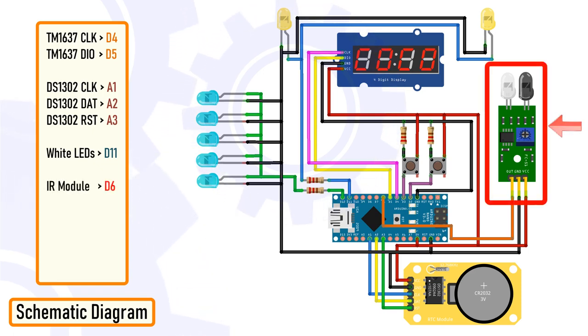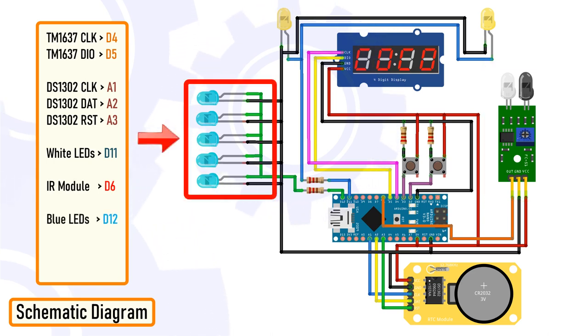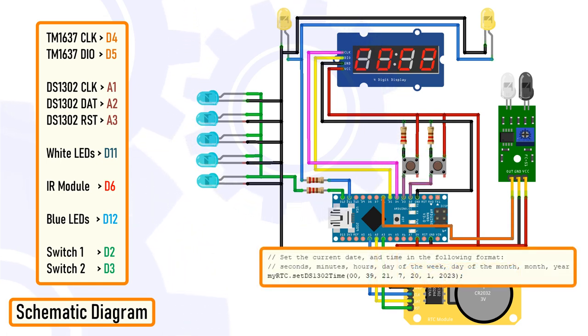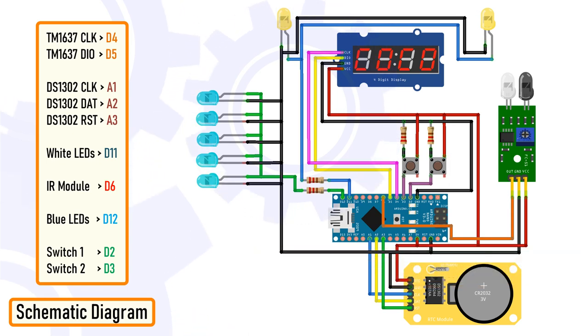The IR module is connected to the D6 pin of the Arduino and controls the blue cluster of LEDs connected to D12 pin of the Arduino. My initial plan was to have two to three push button switches connected to the D2 and D3 pin of Arduino to set the time of the clock. However, in the final version, I did that by adding an extra line of code in my program. I'll explain this in full details when we discuss the code.